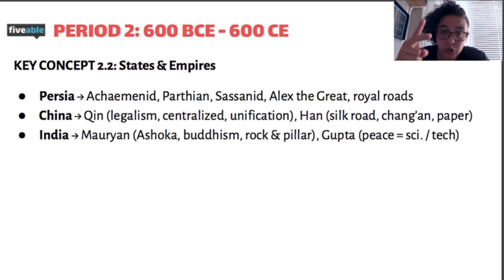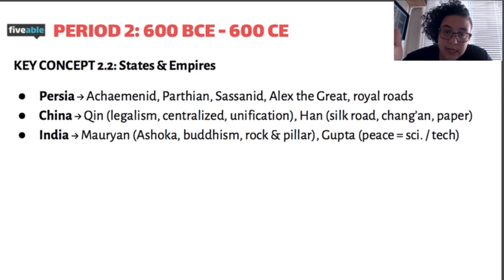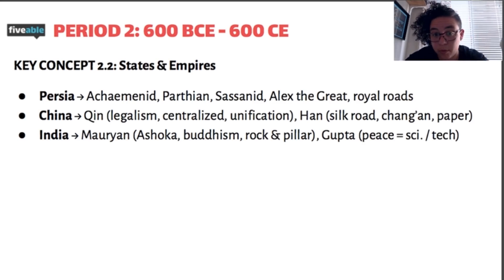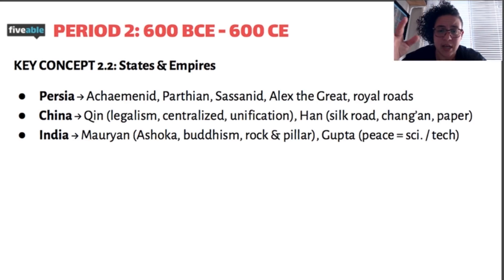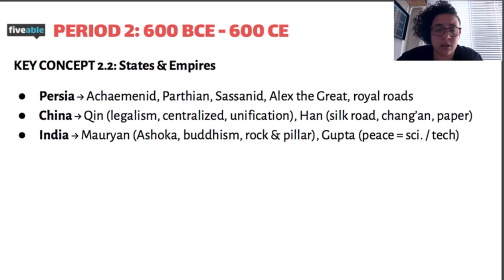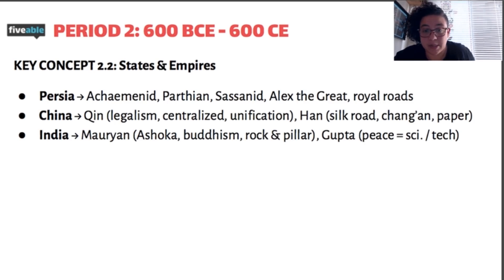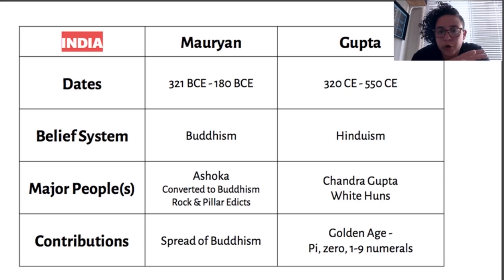Moving over to India, there are two Indian dynasties to know in the classical era: the Mauryan dynasty and the Gupta dynasty. The Mauryan dynasty is connected to Ashoka, who represented Buddhism and is known for the rock and pillar edicts discussed in key concept 2.1. Those are the most important terms to associate with the Mauryan dynasty. While the Mauryan were Buddhist because of Ashoka, the Guptas were more Hindu — though there were still plenty of Hindus in the Mauryan dynasty, and because of Ashoka many people converted to Buddhism.